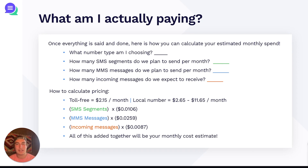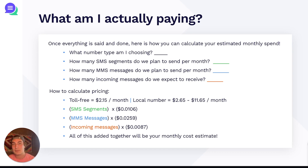So last up, we have how to calculate pricing. For the phone number, the math is straightforward as already covered. Next, take the SMS segments number and multiply that by 0.0106 — this number is the $0.0079 plus the estimated carrier fees for SMS segments. For MMS, take the MMS messages number and multiply that by 0.0259. And lastly, take that incoming messages number and multiply that by 0.0087. Once you add all of those numbers together, that's going to be your monthly cost estimate with Twilio.